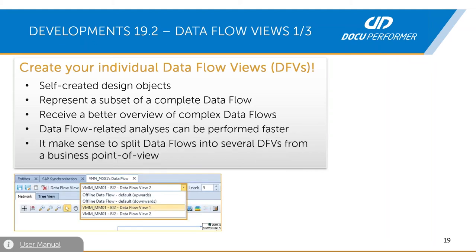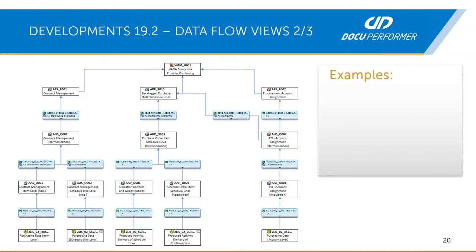Here you can see how the data flow view selection works. You can click Save to save your subset of a data flow. For example, you can open the data flow for purchasing to explain the concept. This is the entire data flow, and we see that this purchasing data flow is a combination of different data.